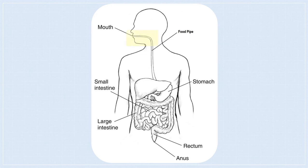The food is first chewed well by our teeth in our mouth, and digestion starts here. The chewed food is swallowed and it travels through the food pipe to our stomach. The stomach is a thick bag made up of muscles. Here the food is broken down into even smaller pieces and is mixed well with digestive juices. The digested food is then sent to the small intestine, where it is further digested and the nutrients are absorbed into the blood. The food that cannot be digested reaches the large intestine, where water is absorbed and the waste is then thrown out of our body through the anus.